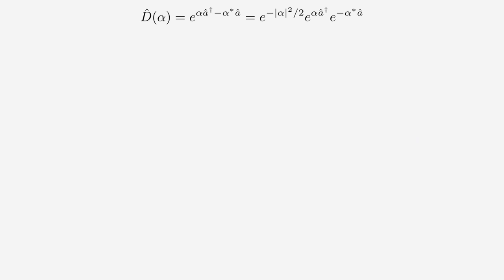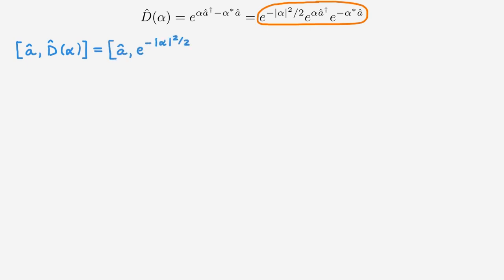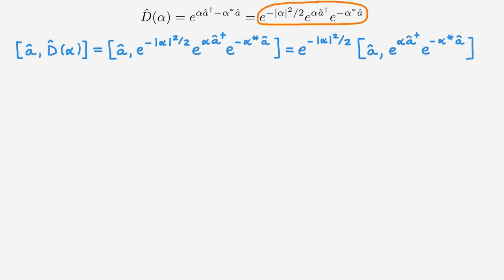Now I want to look at commutators, starting with the commutator of the lowering operator with the displacement operator. Using this form of the displacement operator, we can rewrite the expression and take out the scalar exponential, leaving the commutator of the remaining terms. We then remember the formula for the commutator of an operator with a product of two other operators, which we proved in the video on commutator algebra.